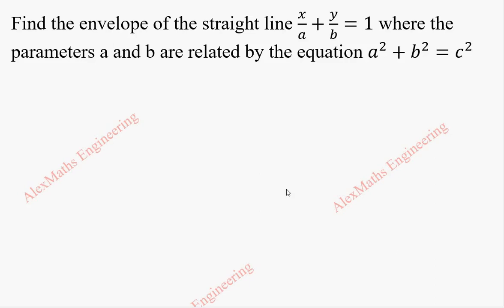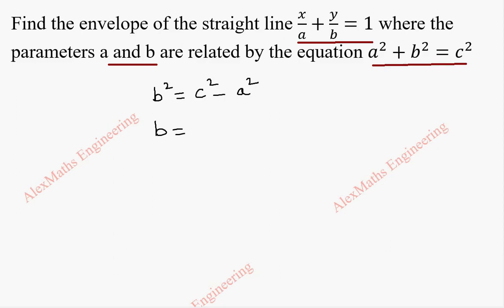Hi students, this is Alex here. In this video we are going to find the envelope of the given straight line whose equation is x/a + y/b = 1, where the parameters a and b are related by the equation a² + b² = c². We take b² = c² - a², so b = (c² - a²)^(1/2).